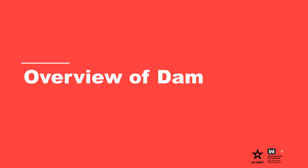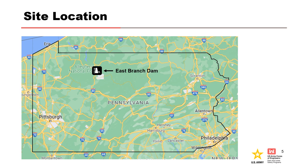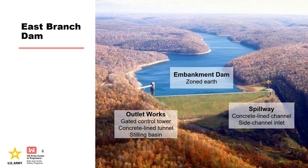East Branch Dam is located about 130 miles northeast of Pittsburgh on the east branch of the Clarion River. The dam is a zoned earth embankment, 184 feet high and 1,725 feet long, with a gated control tower and a concrete-lined conduit through the right abutment. It was constructed between 1947 and 1952.